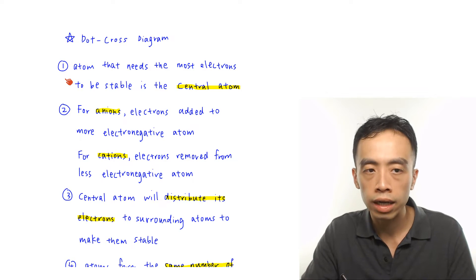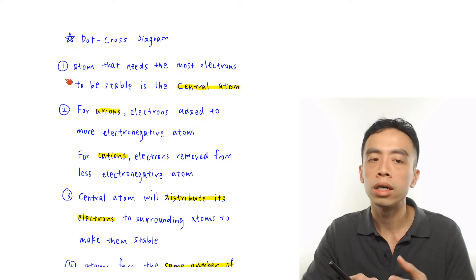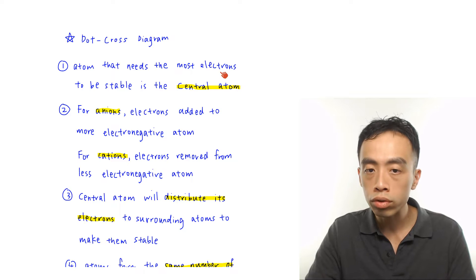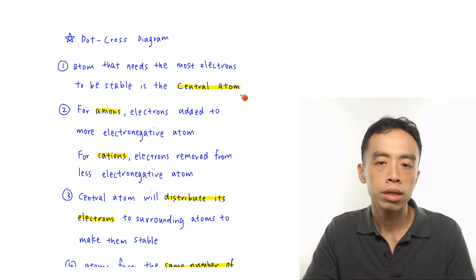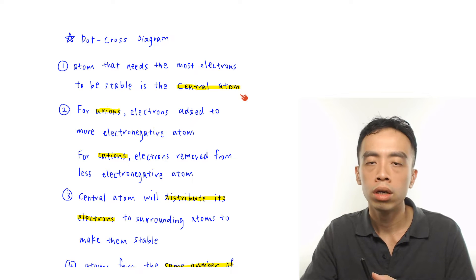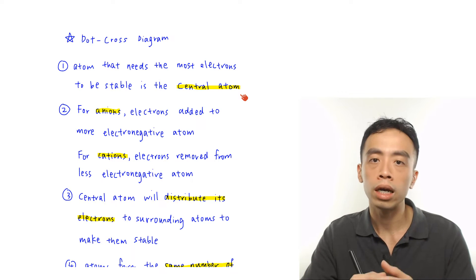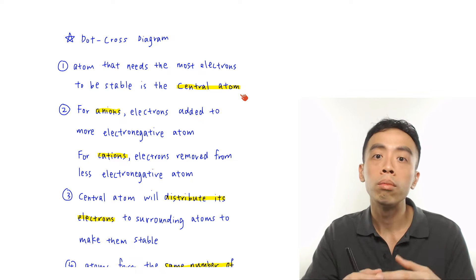We have a few guidelines for drawing dot and cross diagrams, so let's run through them. The first guideline is we need to determine the central atom. Usually, the atom that requires the most electrons to be stable would be the central atom. If I need more electrons, then it makes sense that I sit at the center, so it is easier to form more bonds with more neighbors.